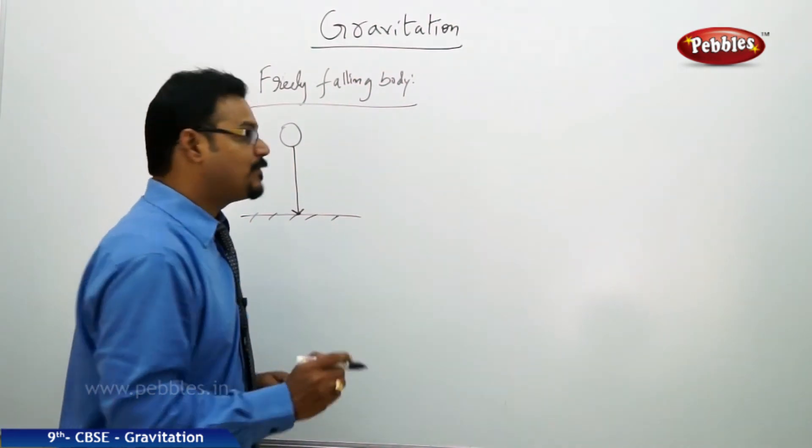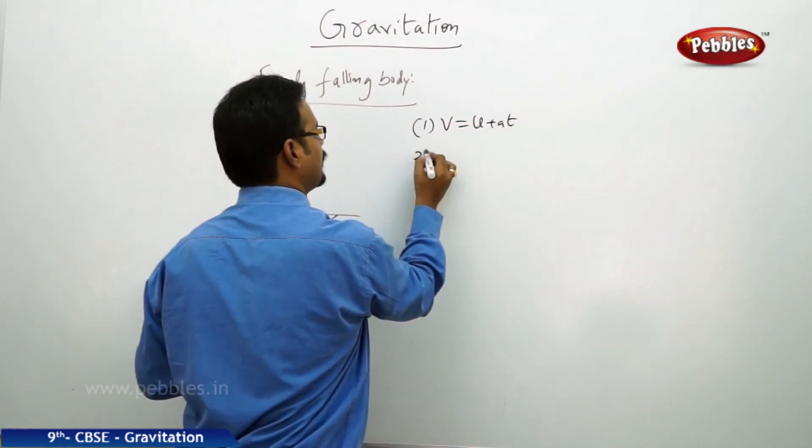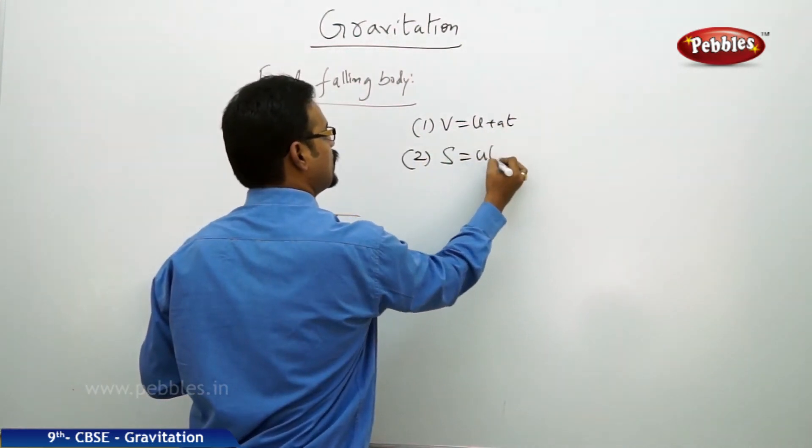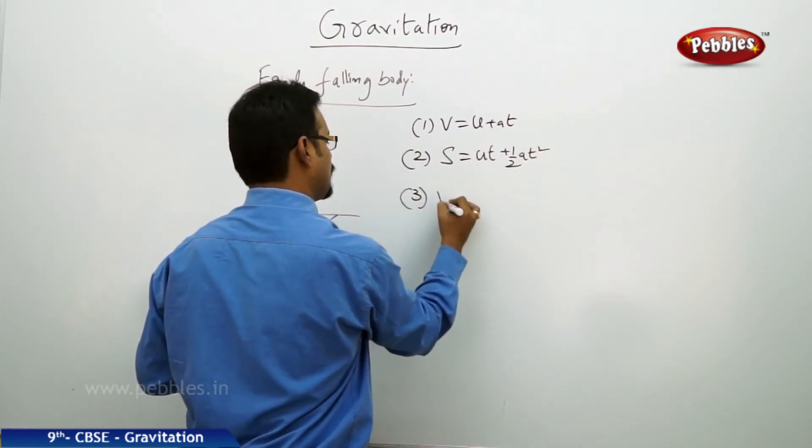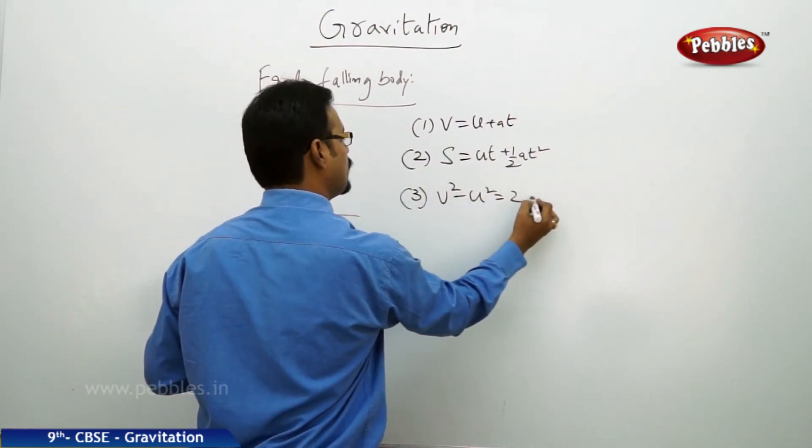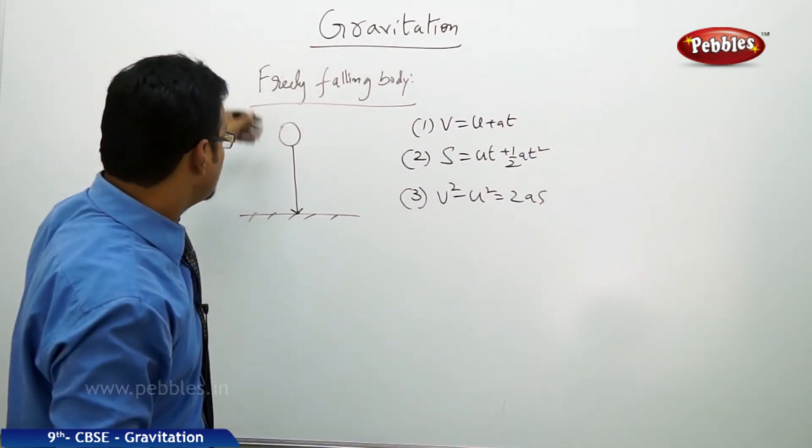So let me write equations of motion first: v equal to u plus at, s equal to ut plus half at square, v square minus u square equal to 2as. So these are the equations of motion. Now what are the conditions for freely falling body?